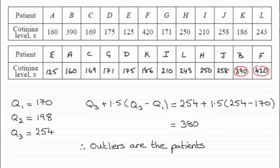Therefore, we can say that the outliers are patients B and F. I hope you were able to see your way through that one.